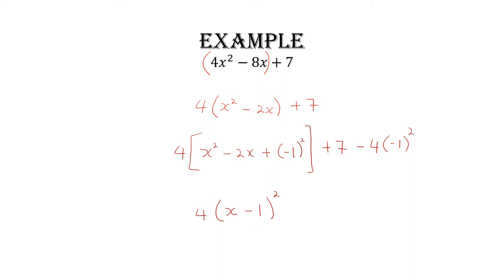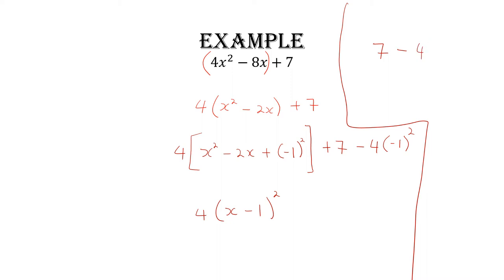This is where something gets interesting. Yesterday we added half of b on the inside and subtracted outside, but today we're not just subtracting half of b — we are also subtracting this four, because the four affected the equation on the inside of the bracket but didn't do anything on the outside. Whatever you do to affect an equation, you have to balance it.